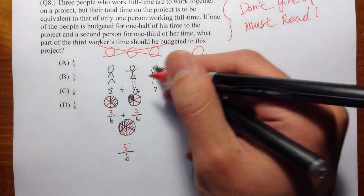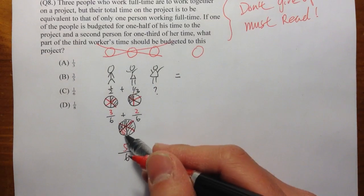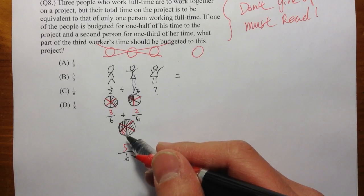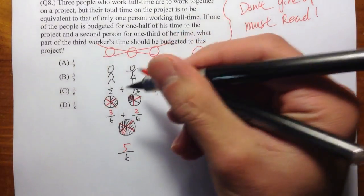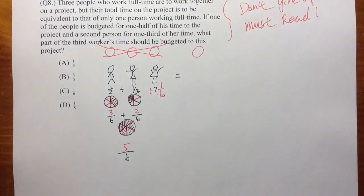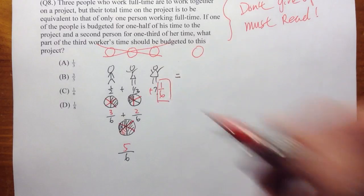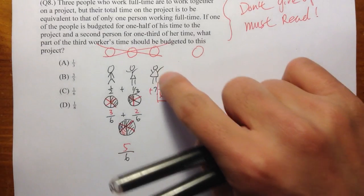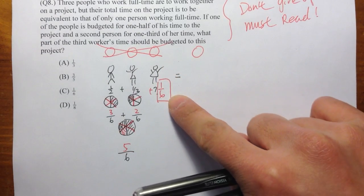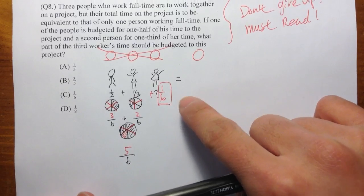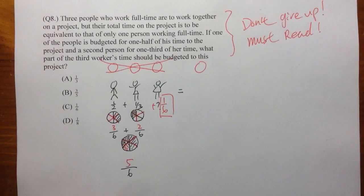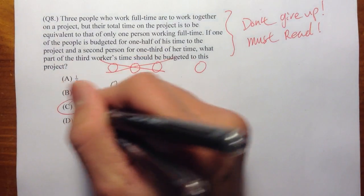So how much does this person get? Of course, you can just see it from the picture. This person gets one over six. So that's the idea. The third person only gets one over six of the time that he has. So the answer, we get it, C.